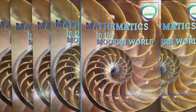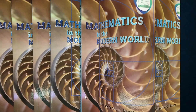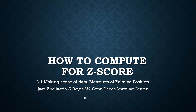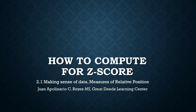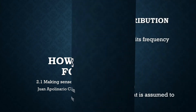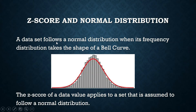We are still with Z-scores. A Z-score is a measure of relative position. The Z-score of a data value is the position of that data value in relation to a fixed number, and that fixed number is the mean or the median. Whenever we are using the Z-score as a measure of relative position, we are making an assumption that our data set follows a normal distribution.